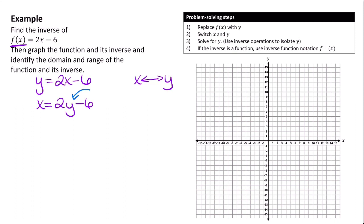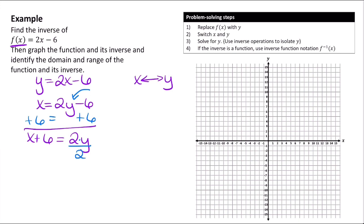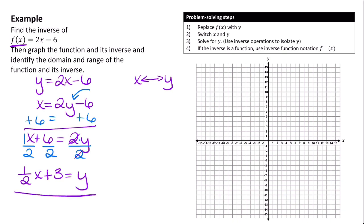We work from the outside in. On the outside we have minus 6, so the opposite is plus — we add 6 to both sides, giving us x + 6 = 2y. Now we need to get rid of the 2. Since 2y means 2 times y, we undo multiplication by dividing both sides by 2. Dividing x by 2 gives us ½x, and 6 divided by 2 is 3, while the 2's cancel on the right side, leaving y. So the inverse is y = ½x + 3.